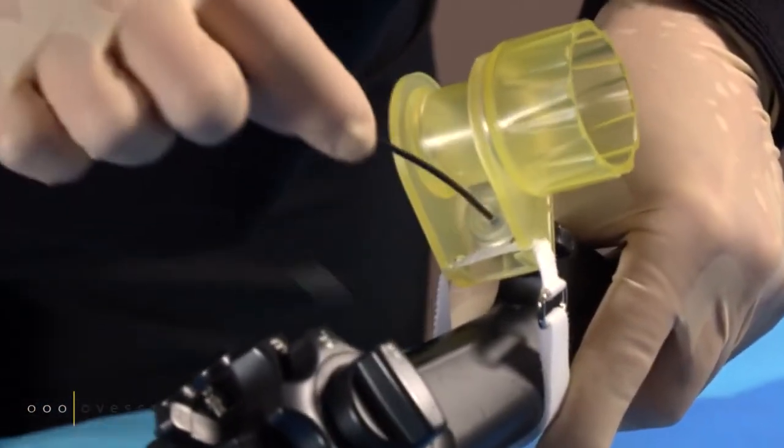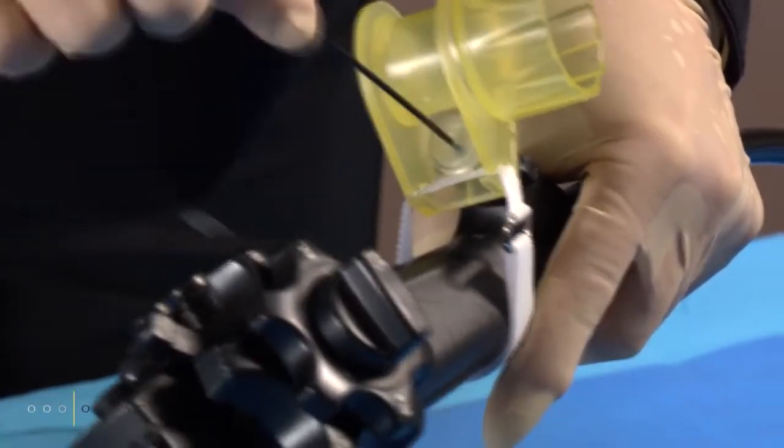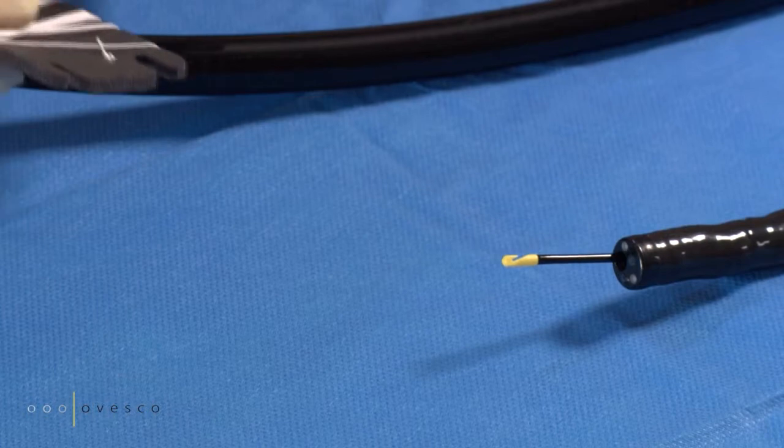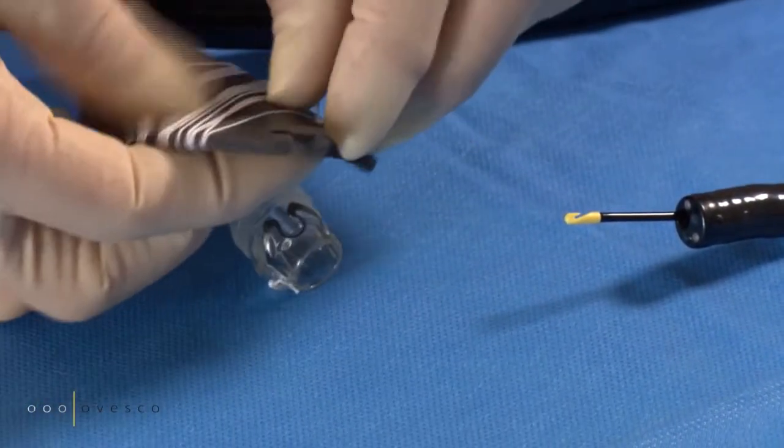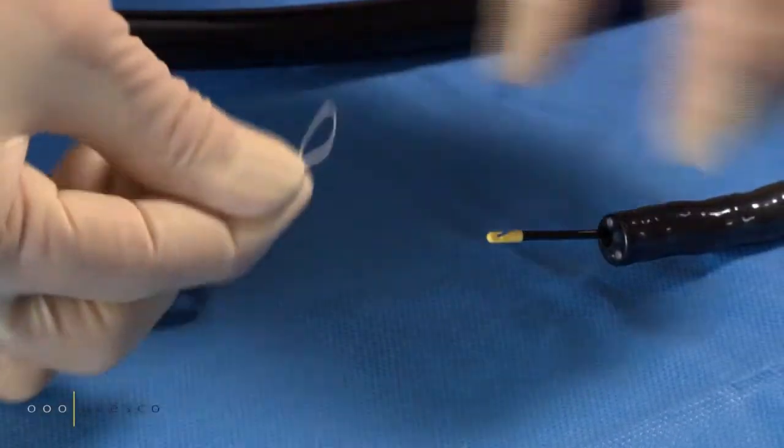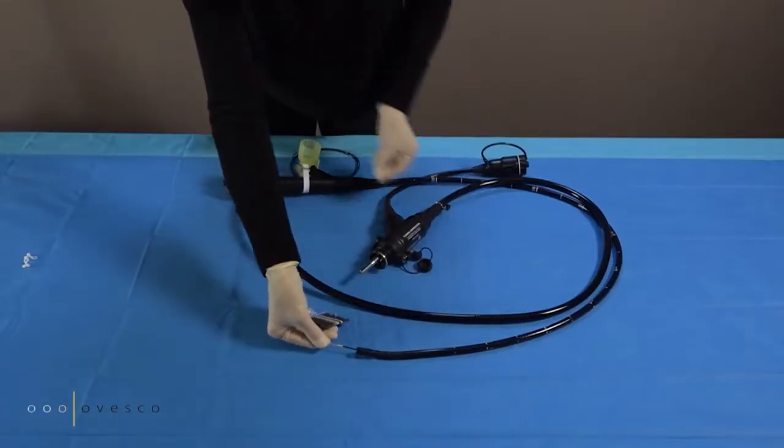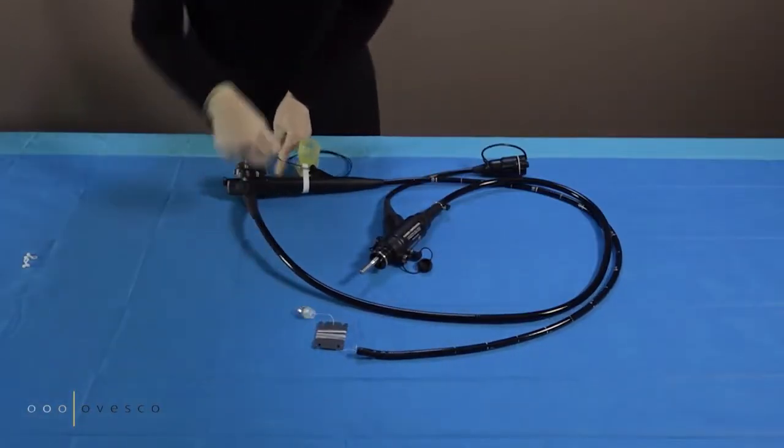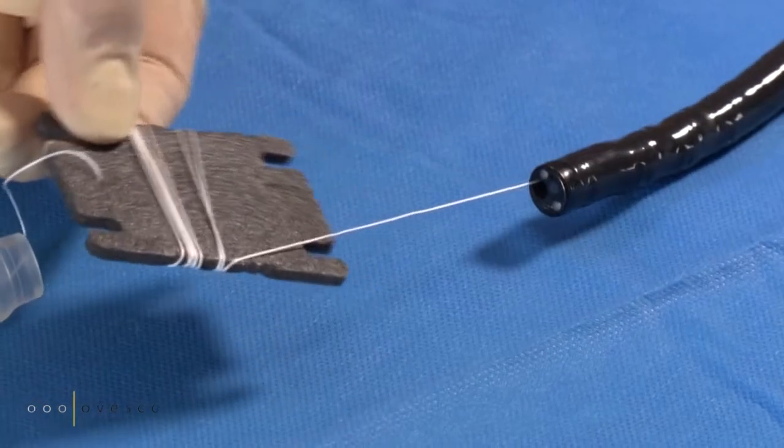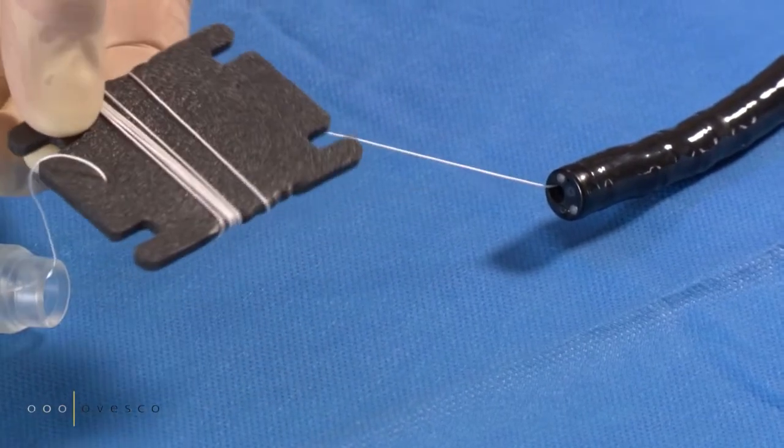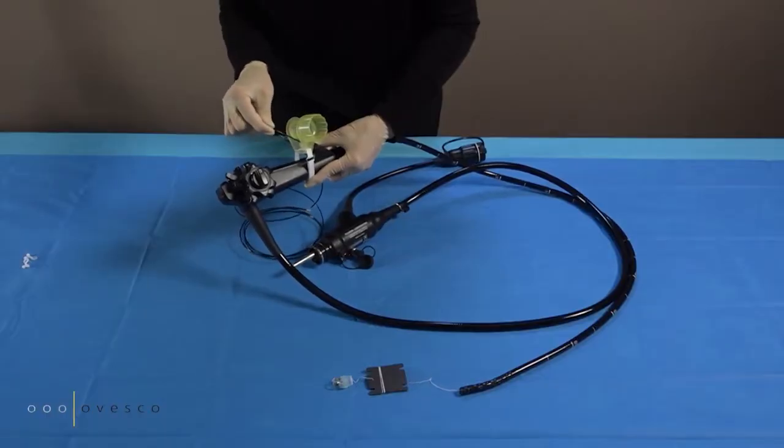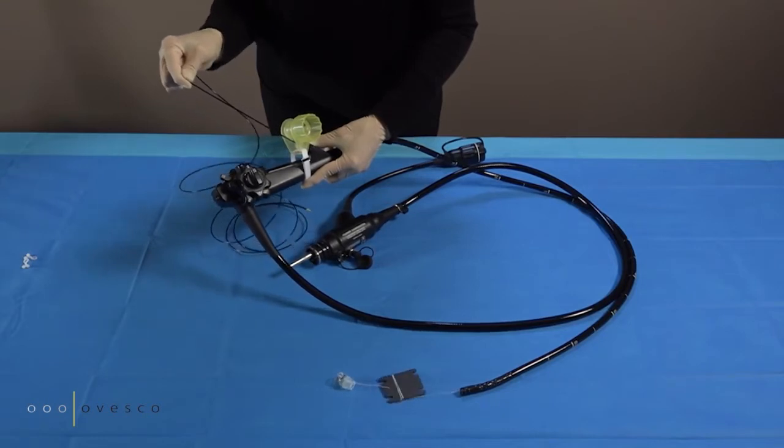Insert the thread retriever into the working channel. Grasp the end of the thread and pull it through. Click the endoscope through the channel.